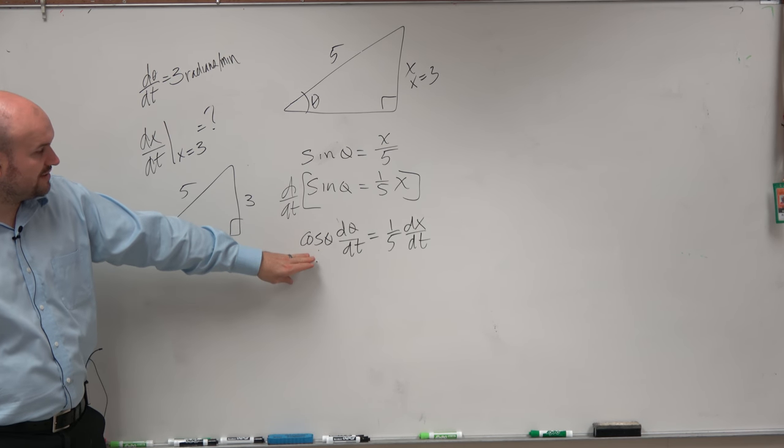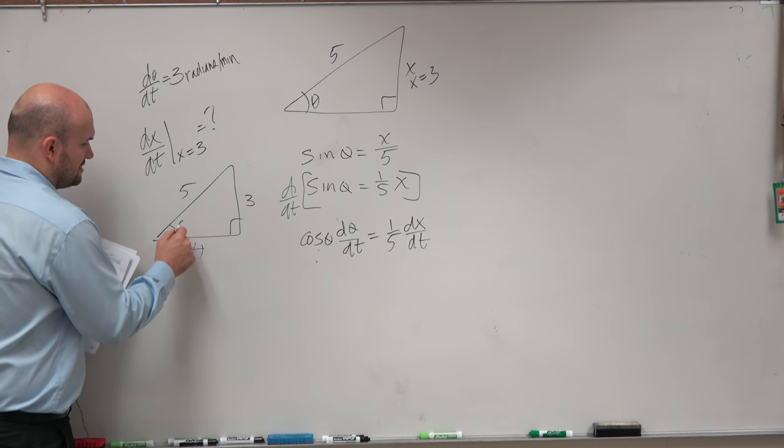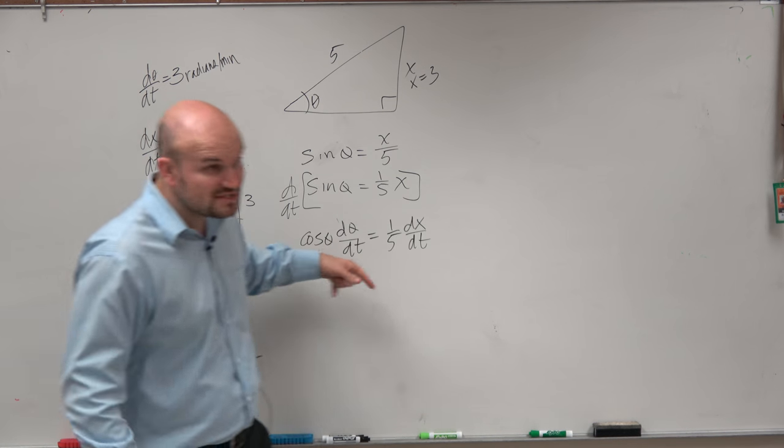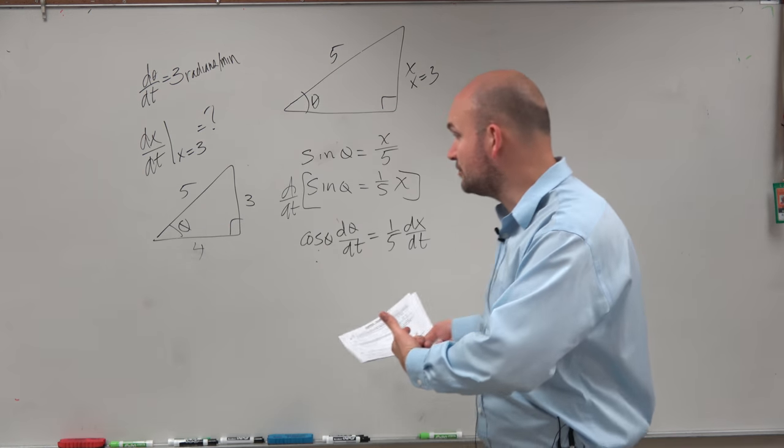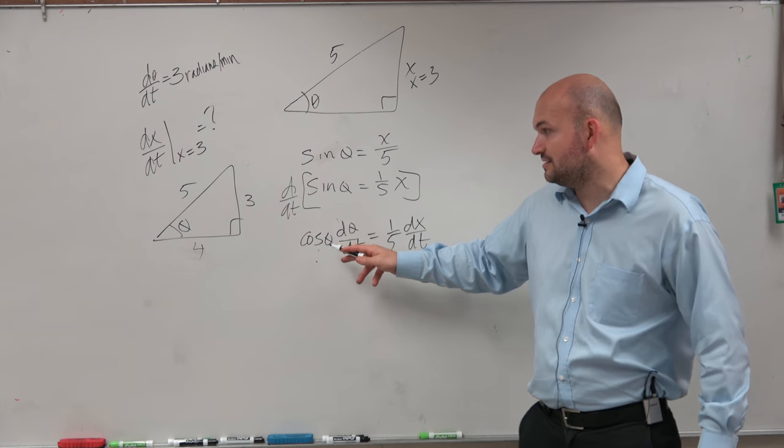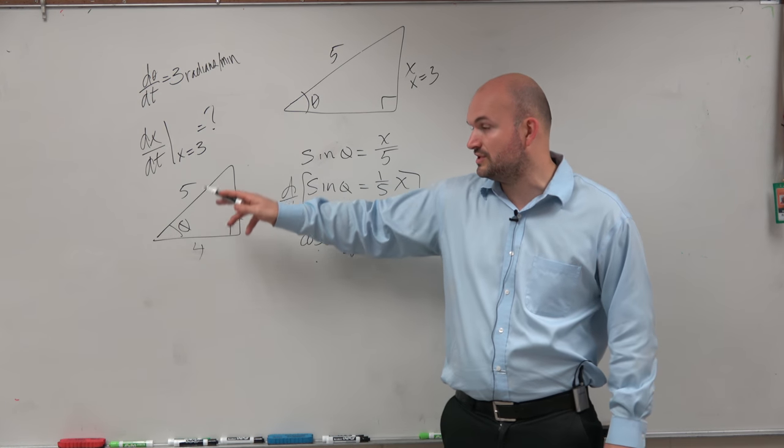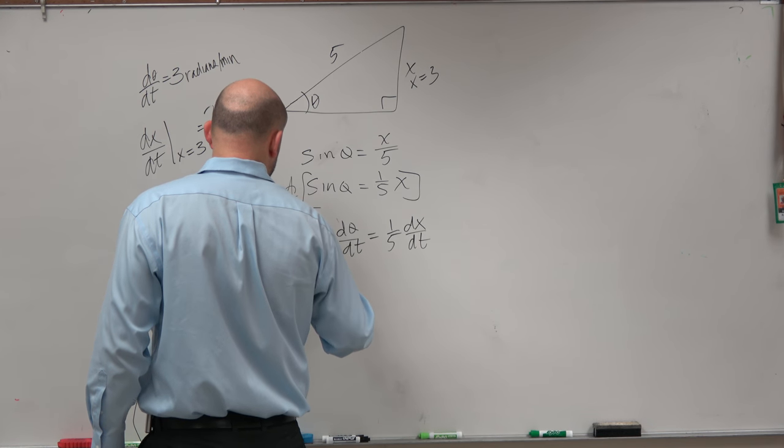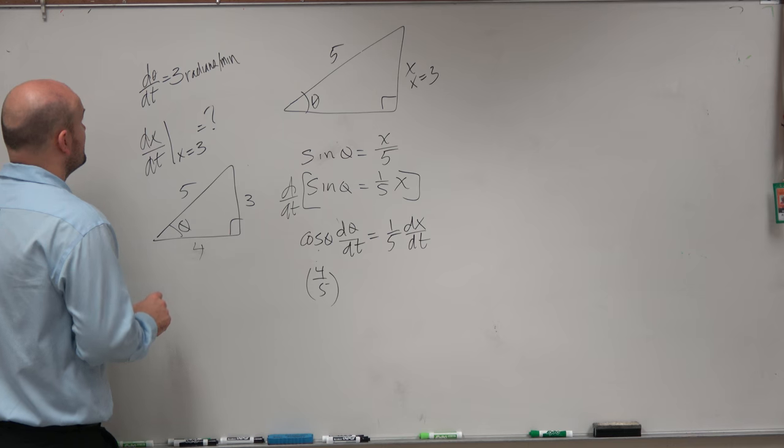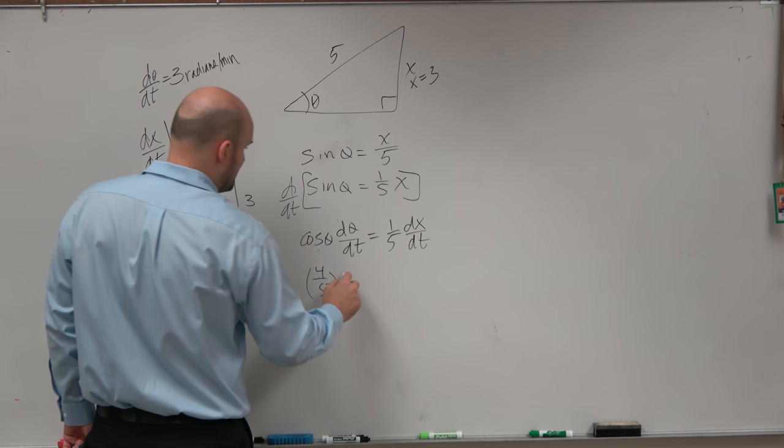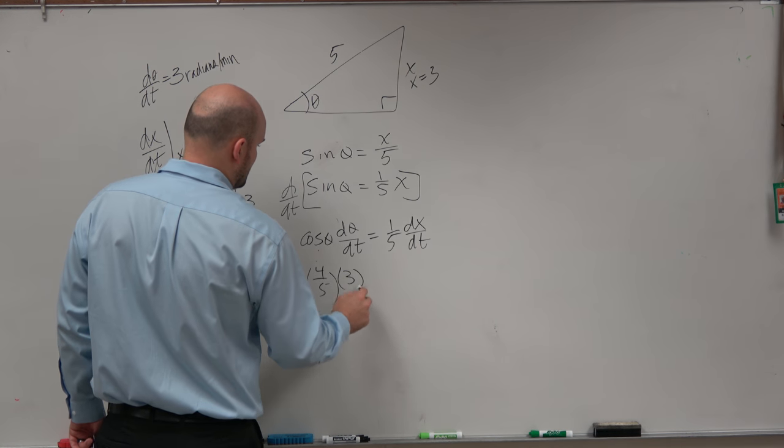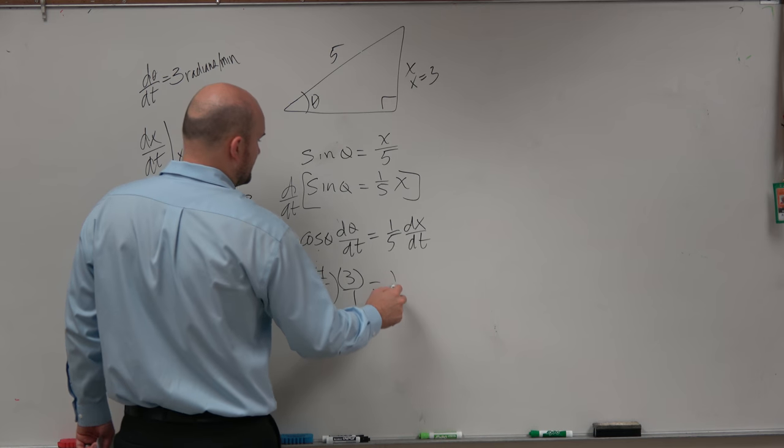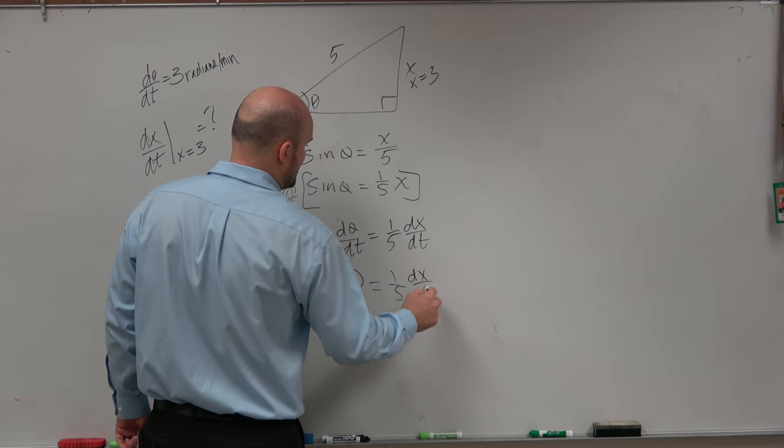So now if we look at this triangle, guys, now they're asking us for what cosine of theta is. And that's why using that Pythagorean triple is important, because cosine is simply just the adjacent over the hypotenuse. So we have 4 over 5. d theta dt is 3 radians per minute. And that's equal to 1 fifth dx dt.